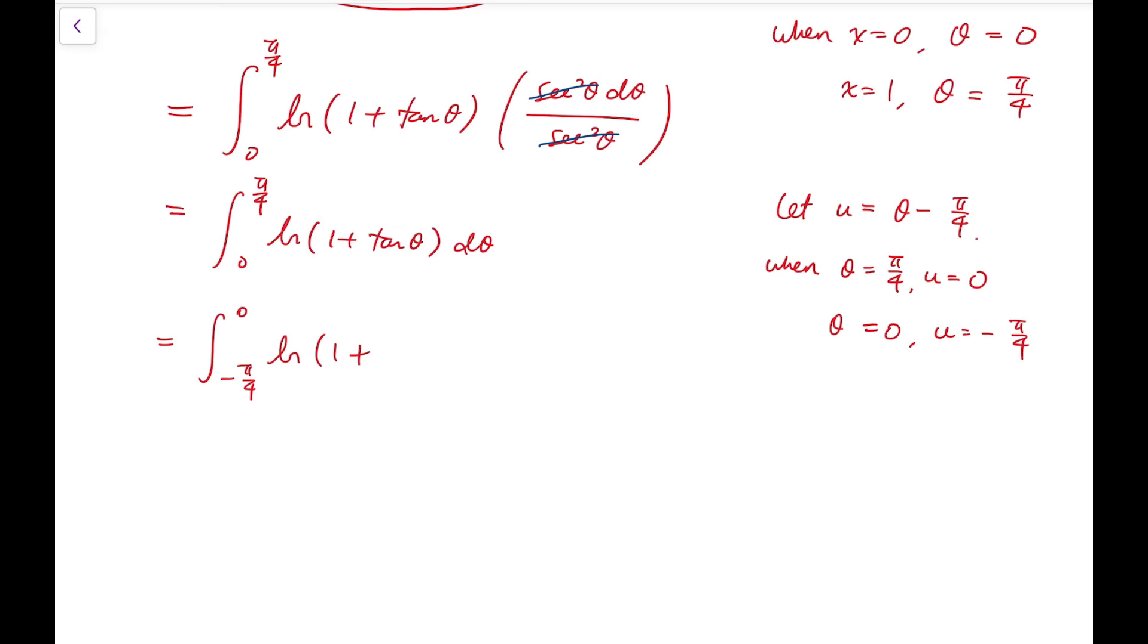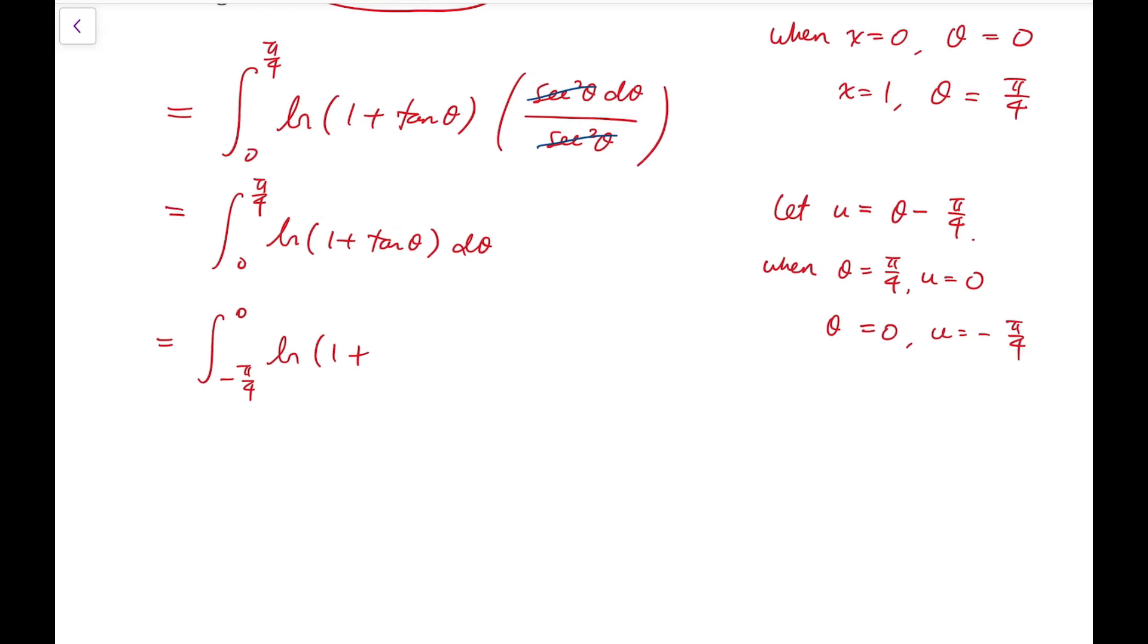For the integrand, tangent theta becomes tangent of u plus pi over 4, because theta equals u plus pi over 4. I'm going to use the compound angle formula on tangent of u plus pi over 4. It's going to be very simple, because tangent of pi over 4 is exactly 1. So this expression becomes 1 plus tangent u over 1 minus tangent u, du.